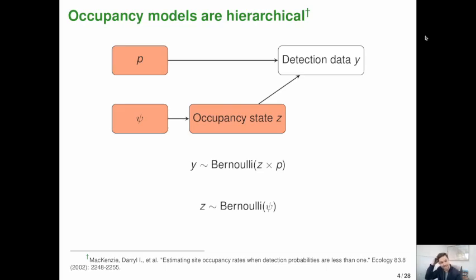One common example in ecology would be an occupancy model. So here we have some detection data. But we know that if we fail to detect a species in a location, it doesn't necessarily mean that site is unoccupied. It may have actually been occupied, but we just failed to detect it. And so the data here are the detections. The states are binary. So z is either 0 or 1 if it's not occupied or occupied. And the parameters are p, the probability of detection, and psi, the probability of occupancy.